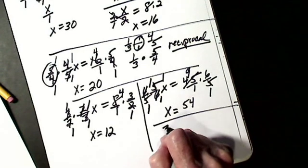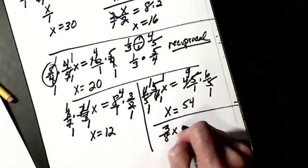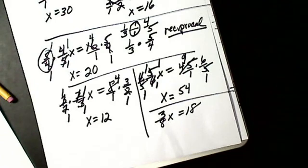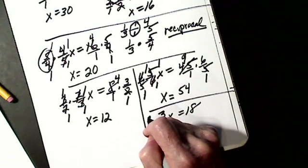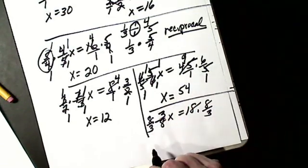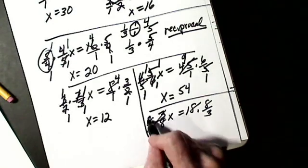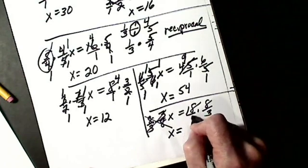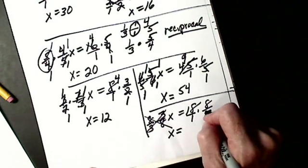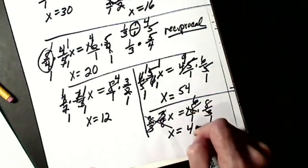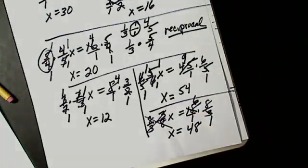Let's do one more: 3 eighths x equals 18. To get rid of a fraction in an equation, I multiply by the reciprocal — multiply by 8 thirds on both sides. This all cancels out to 1x. Any whole number you put over 1. 3 into 3 is 1, 3 into 18 is 6, 6 times 8 is 48. So x equals 48.